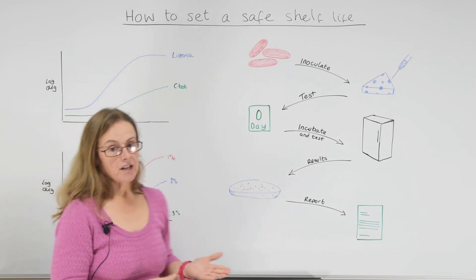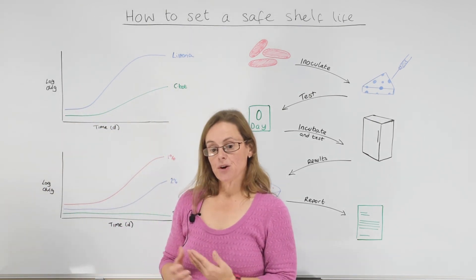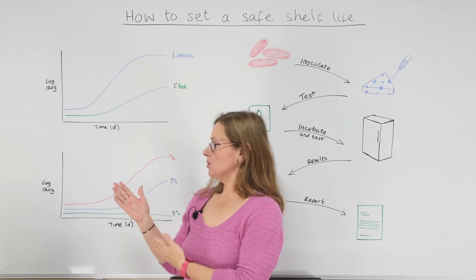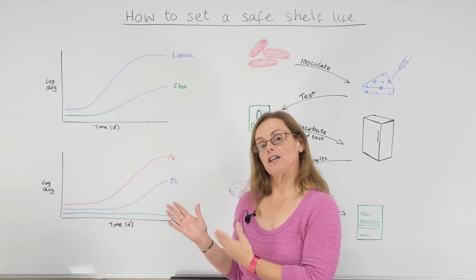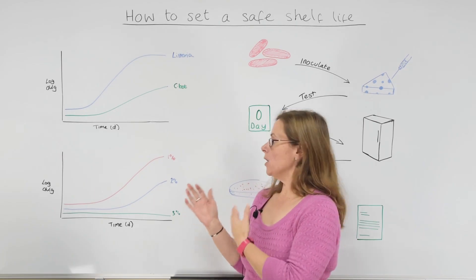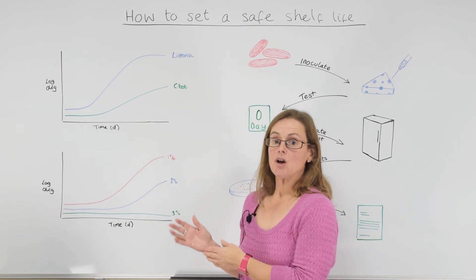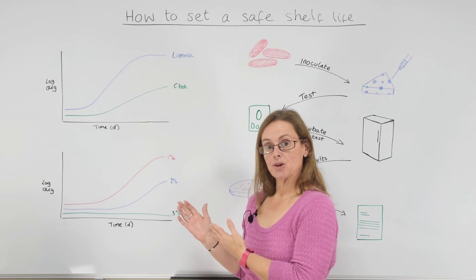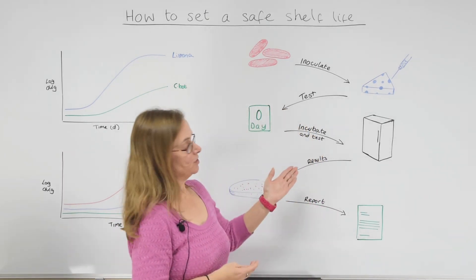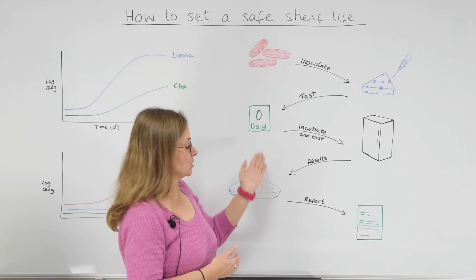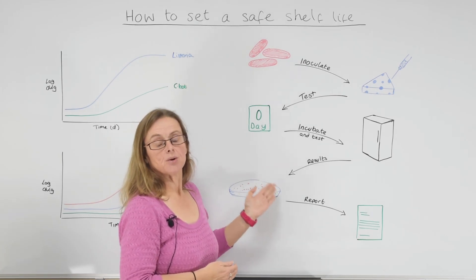So in summary, if you want to set a safe shelf life there are a few ways you can go about it. You can do the really easy, quick-to-use predictive modelling in the first instance to actually hone in and find out where your risks are, what organisms are going to be an issue, where you need to focus - and then you can move on and do the challenge test studies which will then prove whether growth is going to occur or not.